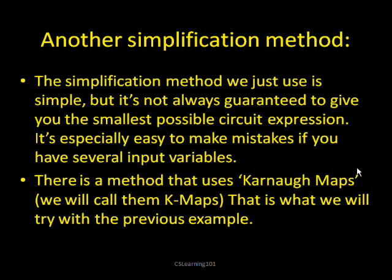So what we did was use a simple factoring out with math and Boolean logic. But this doesn't always guarantee that it will give you the smallest possible circuit expression that you can have. It is also easy to make mistakes if you have several input variables. So there's another method that uses something called a Karnaugh map, which we're going to call K-maps because that's difficult to pronounce. And we're going to use those now to see how we can get even smaller expression.